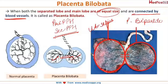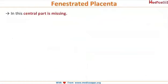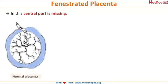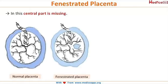The next type of abnormality is fenestrated placenta, in which a central part of the placenta is missing. As seen in this diagram, the central part is absent, and this defect usually involves the villus tissue within the chorionic plate.